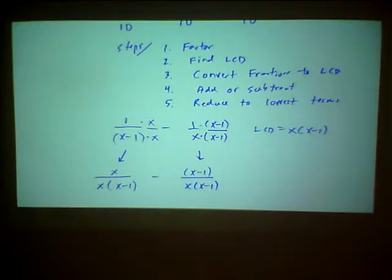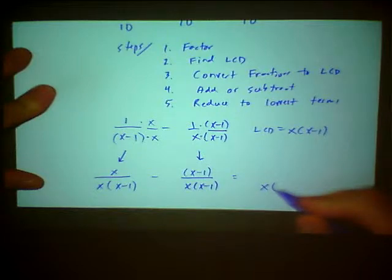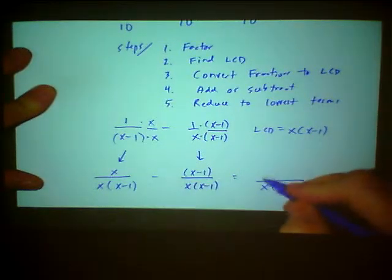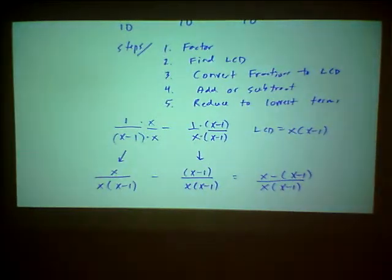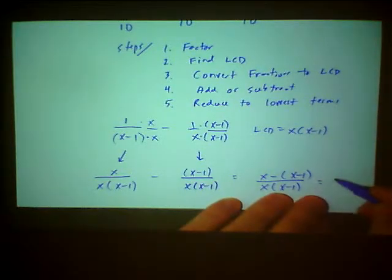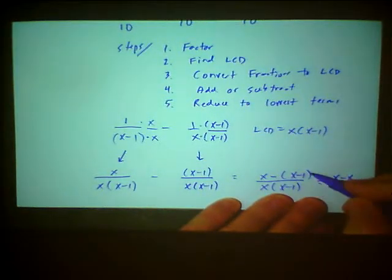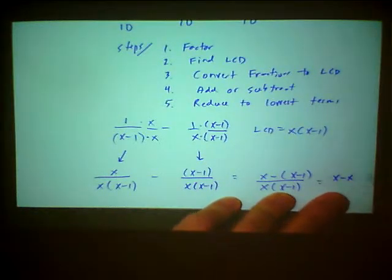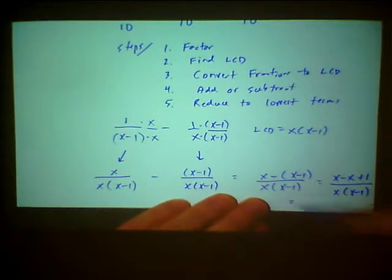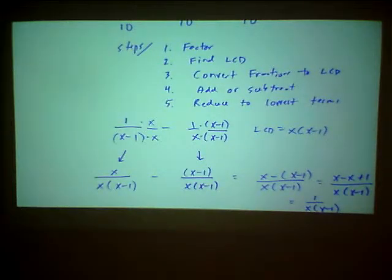Now that I have a common denominator, I can subtract these fractions. Write the common denominator and subtract the numerators: x minus (x minus 1). The numerator simplifies — distribute the negative sign: x minus x plus 1. The x minus x cancels out, leaving 1 over x(x minus 1). So when you're finally finished, this simplifies down to 1 over x times (x minus 1). That's the procedure you simply follow over and over again.